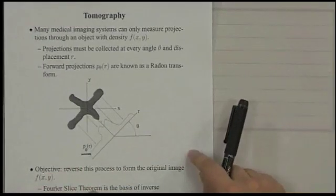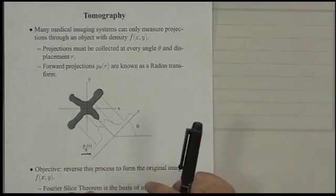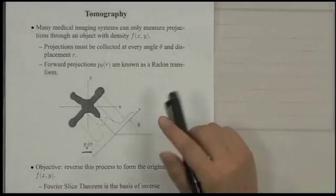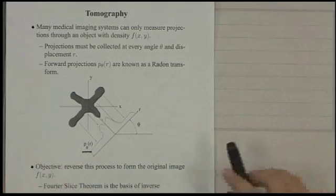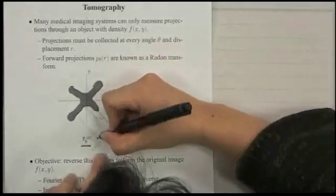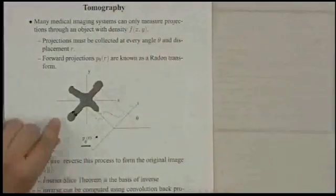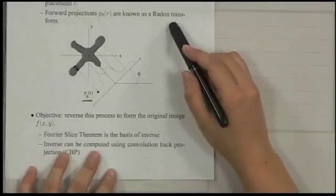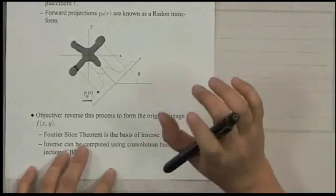And actually, in reality, this is not actual measurement we get. What we get is attenuated number of photons instead of this number, but we can easily calculate this projection from those attenuated photon counts. This value corresponds to the integral along this line. And then these forward projection p are known as a Radon transform. So if you hear the term Radon transform, this means just projections.